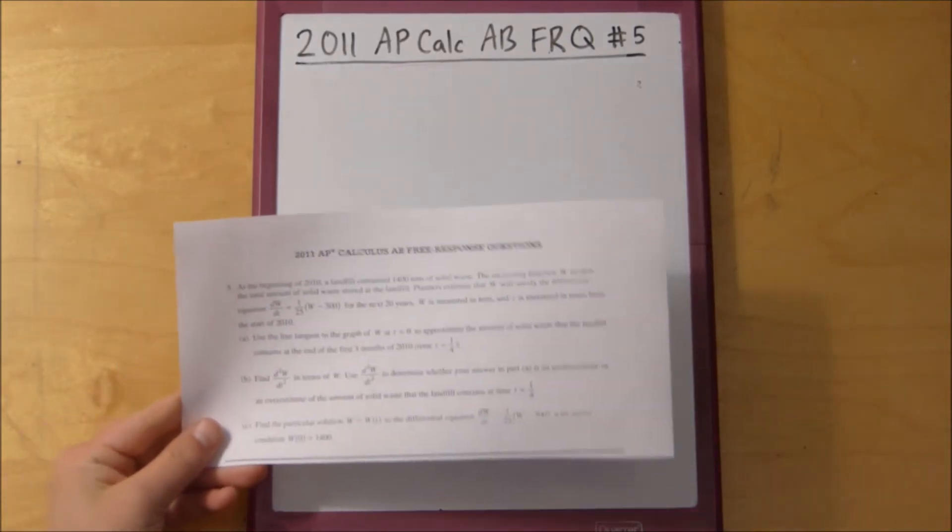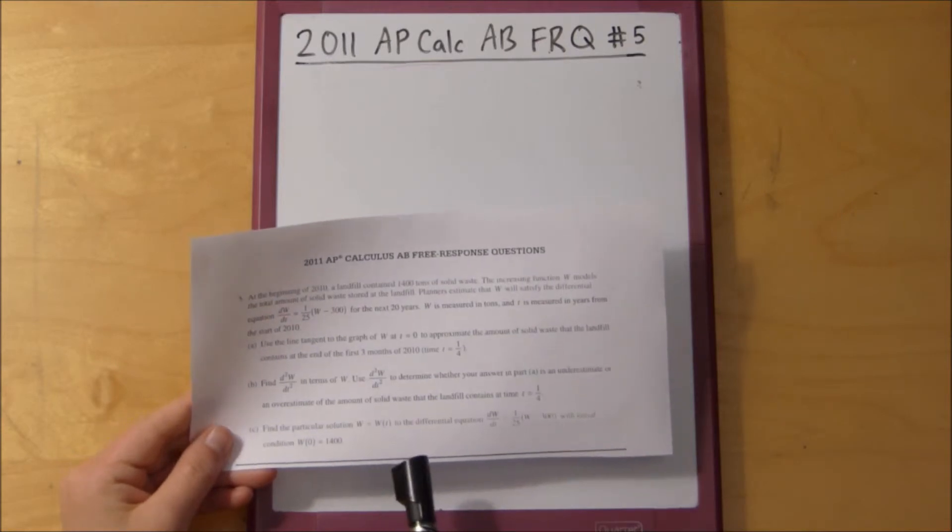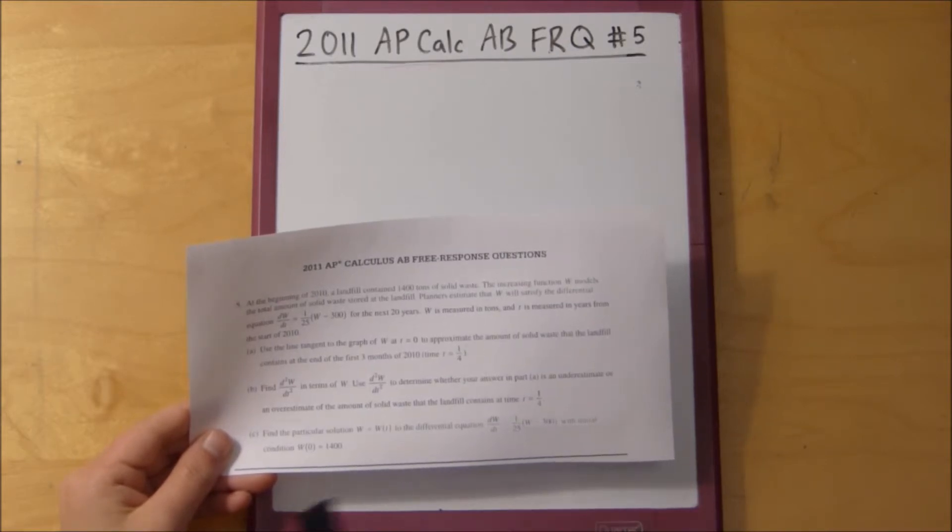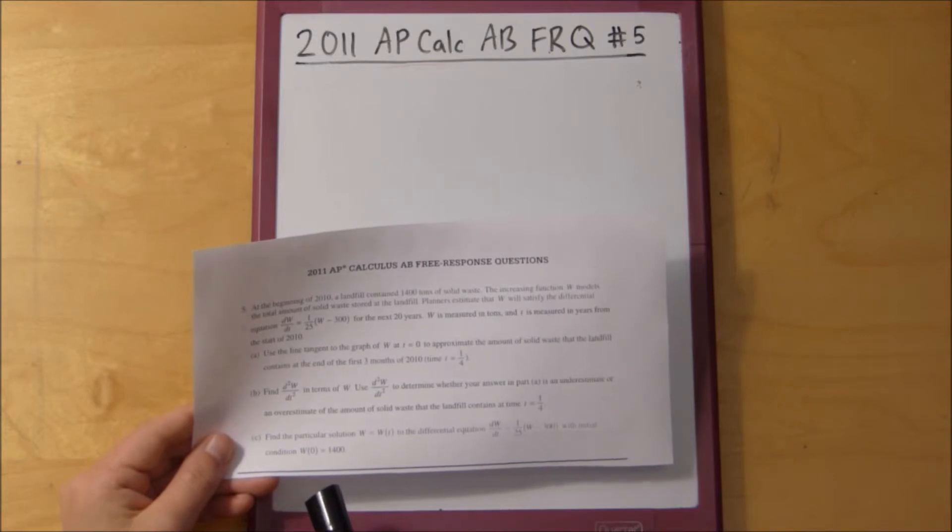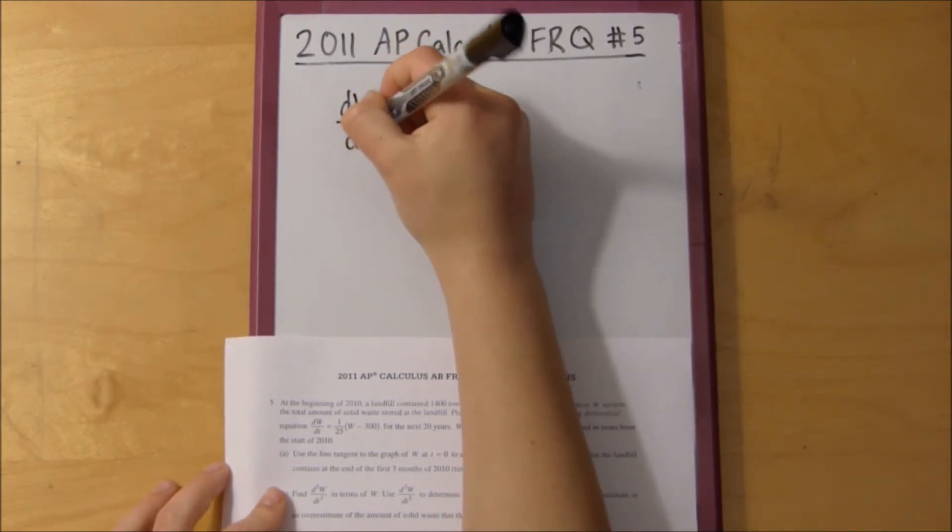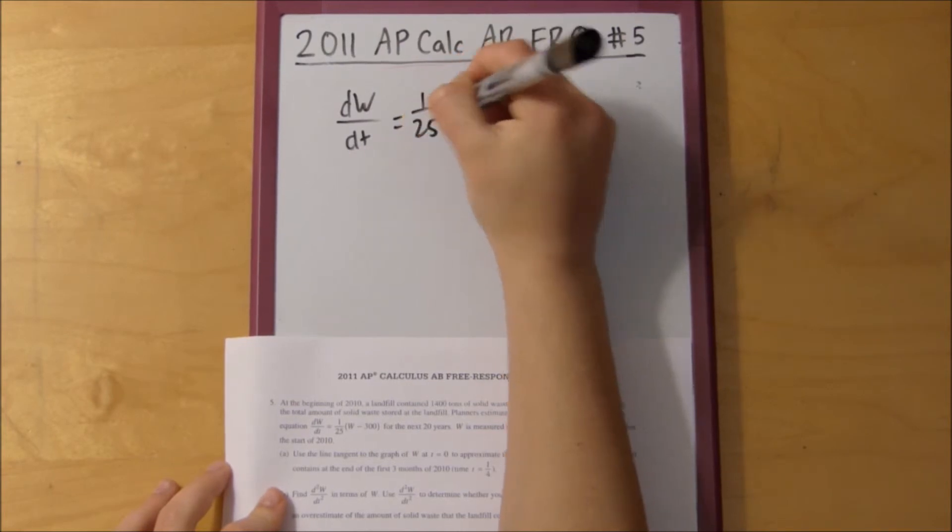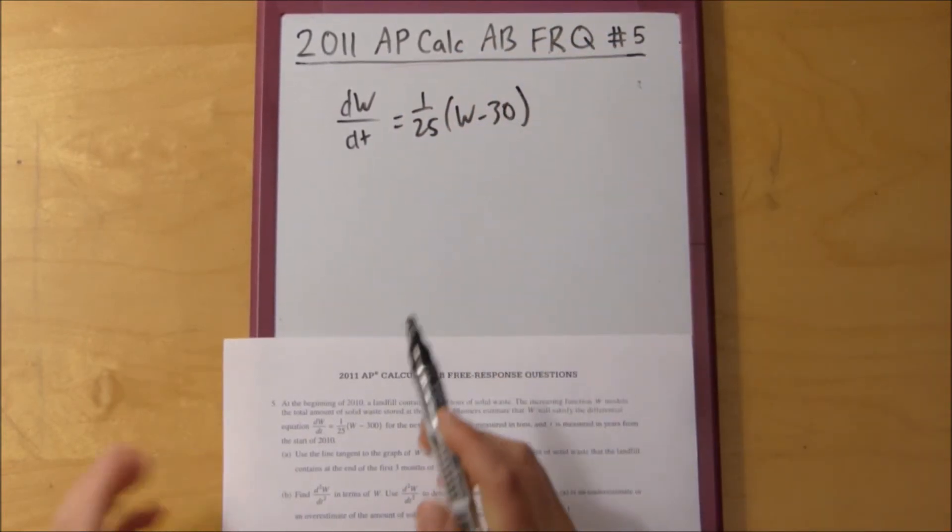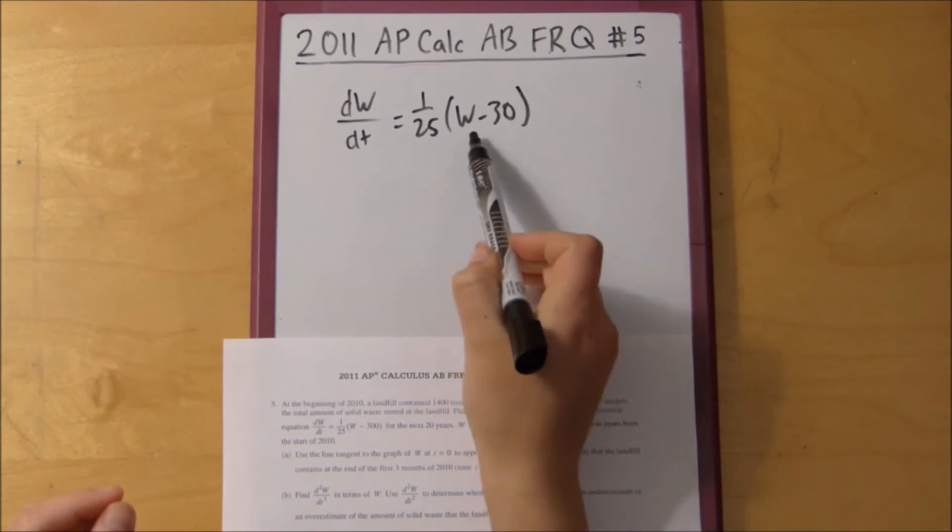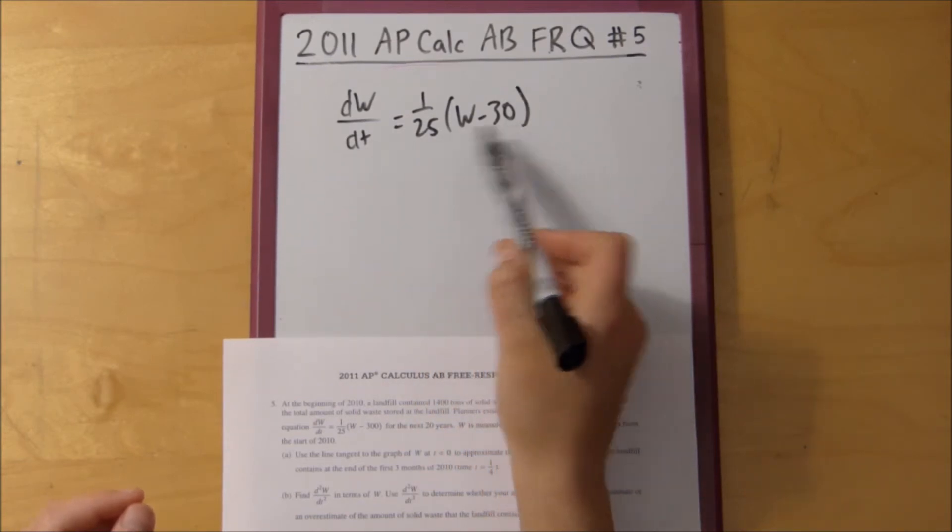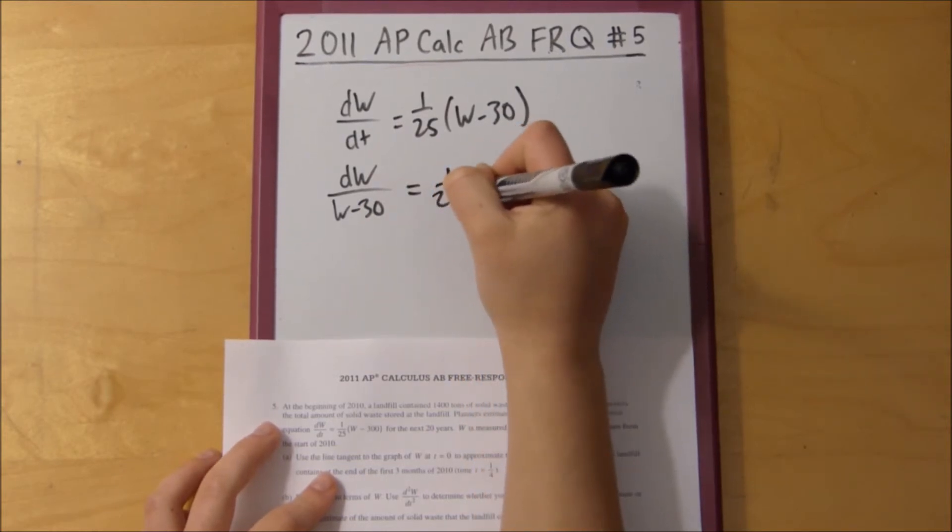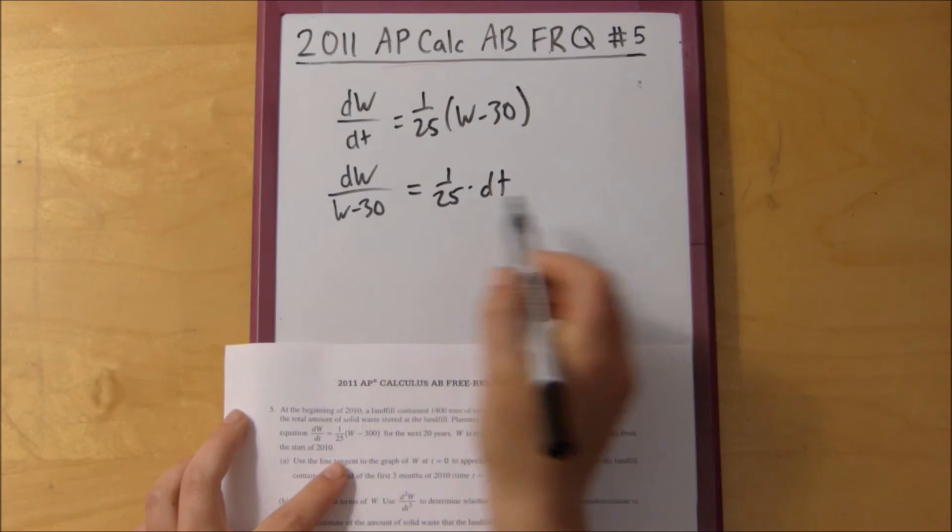Now, the final part of this question asks us to find the particular solution w equals w of t to the differential equation dw/dt equals 1 over 25 times w minus 300 with initial condition w of 0 equals 1400. So we're going to do some separation here. So we're given dw/dt equals, so what we want to do is we want to separate the variables so that they correspond with each other. So I see a w here and I see a w here, so what we're going to do is we're going to divide both sides by w minus 300 and then we're going to multiply this dt across. So dw over w minus 300 equals 1 over 25 times dt.